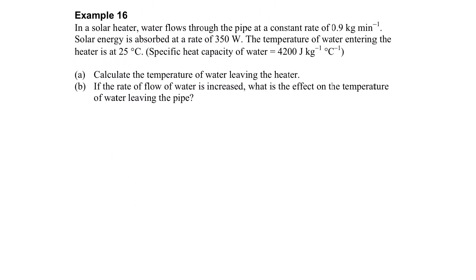When we consider the solar heater, usually we will have a flow rate of the water. So what is the flow rate? It's kg per minute. Usually we will change it to kg per second first by dividing it by 60. But actually what is the flow rate? It's the mass over time because you can see it's kg per second.